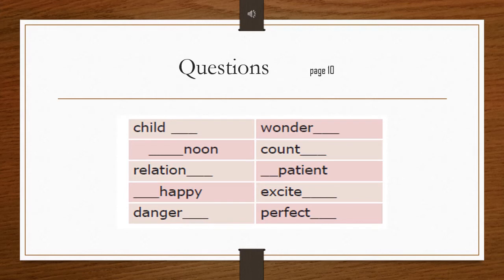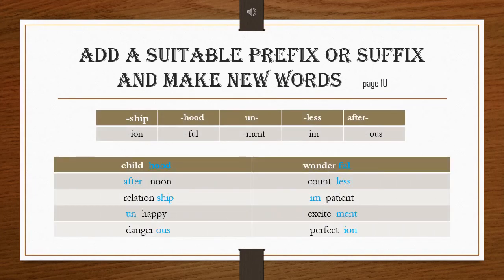Now let us see an example from your textbook on page 10. The question is: add a suitable prefix or suffix and make new words. The word 'child' with the suffix 'hood' forms 'childhood.' The word 'noon' with the prefix 'after' forms 'afternoon.' 'Relation' plus 'ship' becomes 'relationship' — a suffix. 'Un' plus 'happy' forms 'unhappy,' the opposite of happy. 'Danger' plus 'ous' becomes 'dangerous' — a suffix.